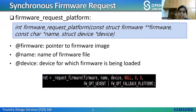Next is firmware_request_platform, used to request firmware with the platform firmware fallback. Arguments include: firmware pointer, name of the firmware file, and device. It uses flags OPT_UEVENT and OPT_FALLBACK_PLATFORM, indicating fallback to a firmware copy embedded in the platform's firmware such as UEFI. This call is similar to request_firmware, except that if direct filesystem lookup fails, it falls back to looking for a copy of the requested firmware embedded in the platform's main firmware.